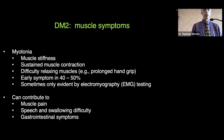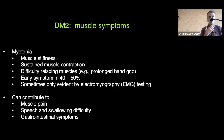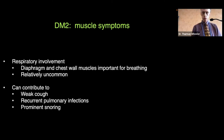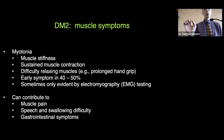Myotonia is a muscle stiffness — a sustained contraction — manifested by difficulty releasing or relaxing a muscle, like a prolonged hand grip. This symptom occurs in up to around 50% as an early presenting symptom, almost as common as muscle pain and weakness. Sometimes the myotonia is only evident on EMG needle testing. Myotonia may contribute to muscle pain and can also contribute to speech, swallowing difficulty, and gastrointestinal symptoms.